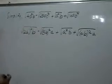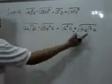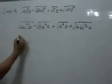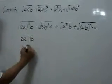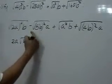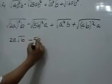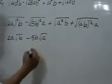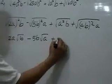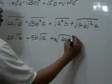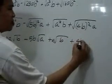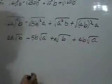Now we apply the law of radicals and take out the perfect squares. So we will have 2a times the square root of b minus 5b times the square root of a plus a square root of b plus 4b square root of a.